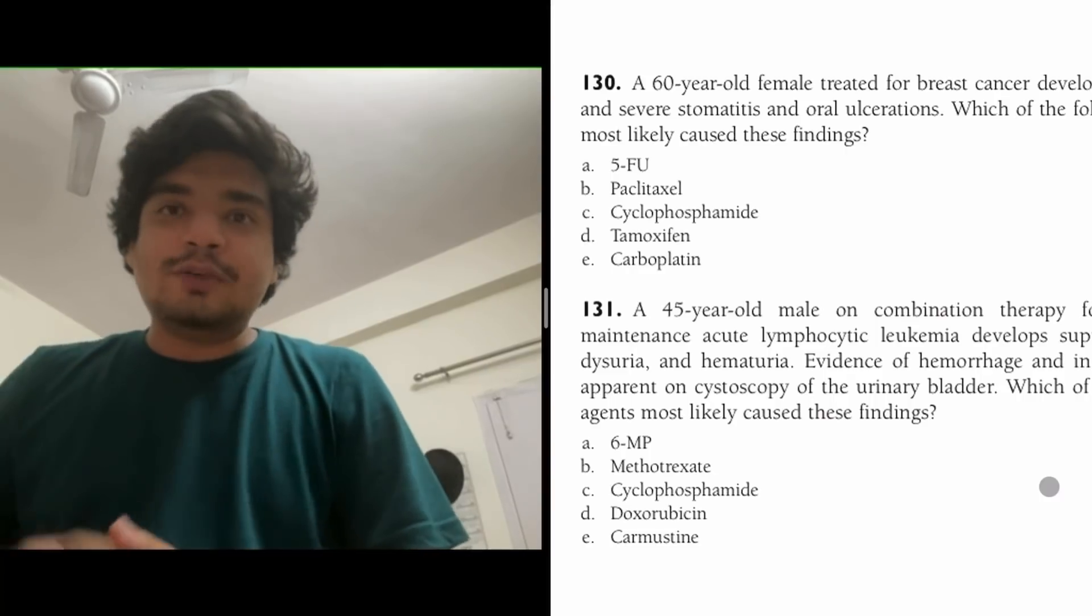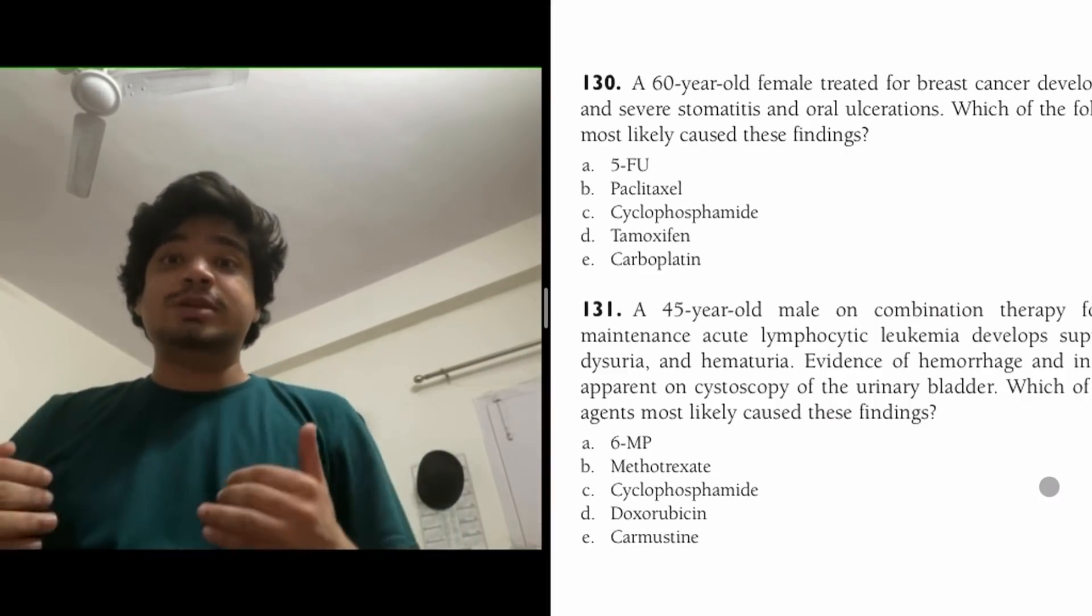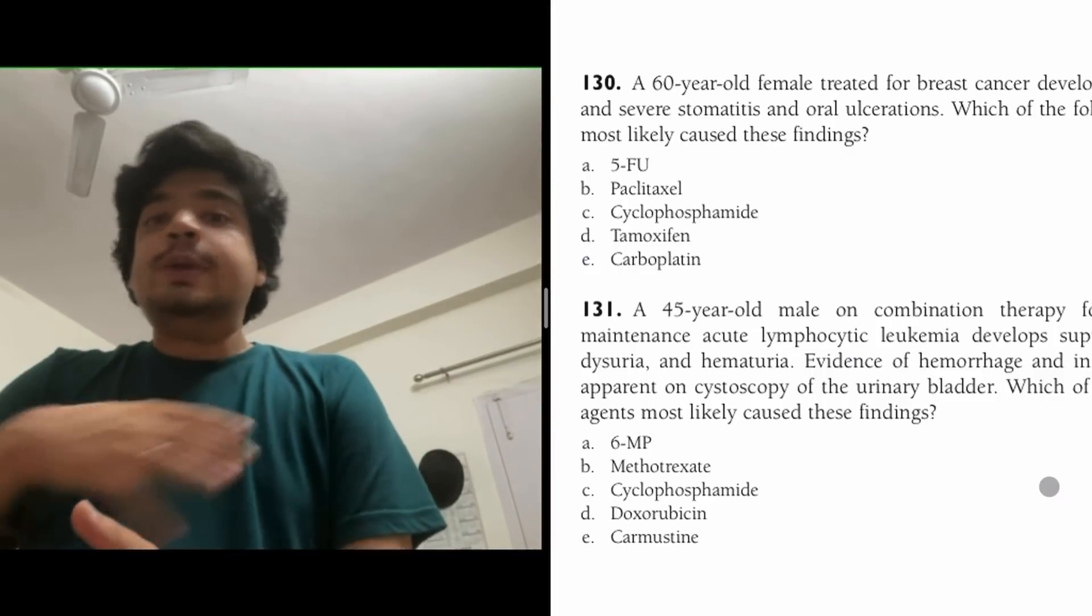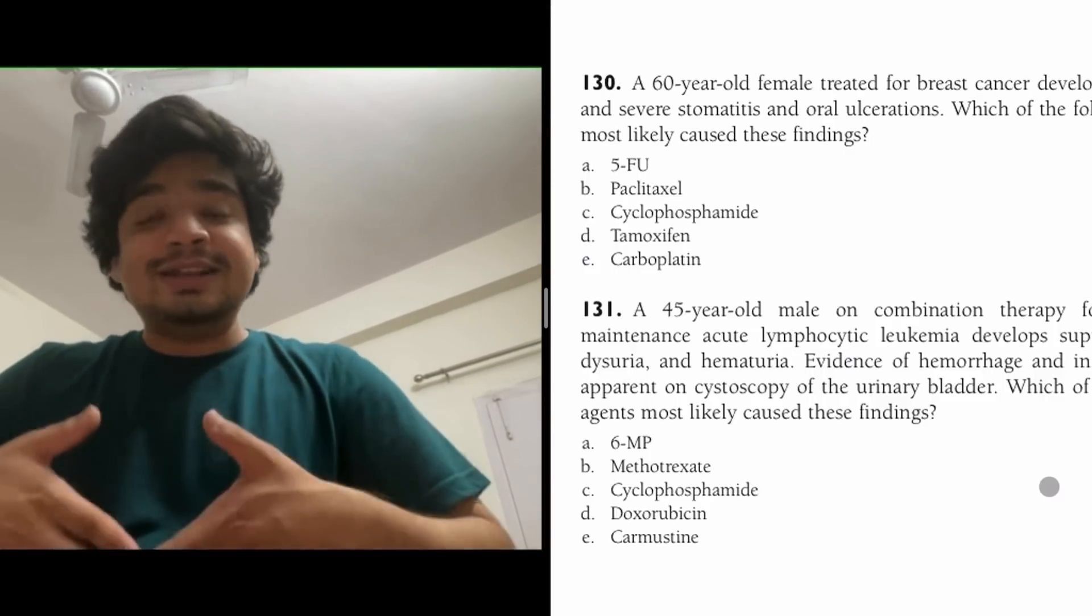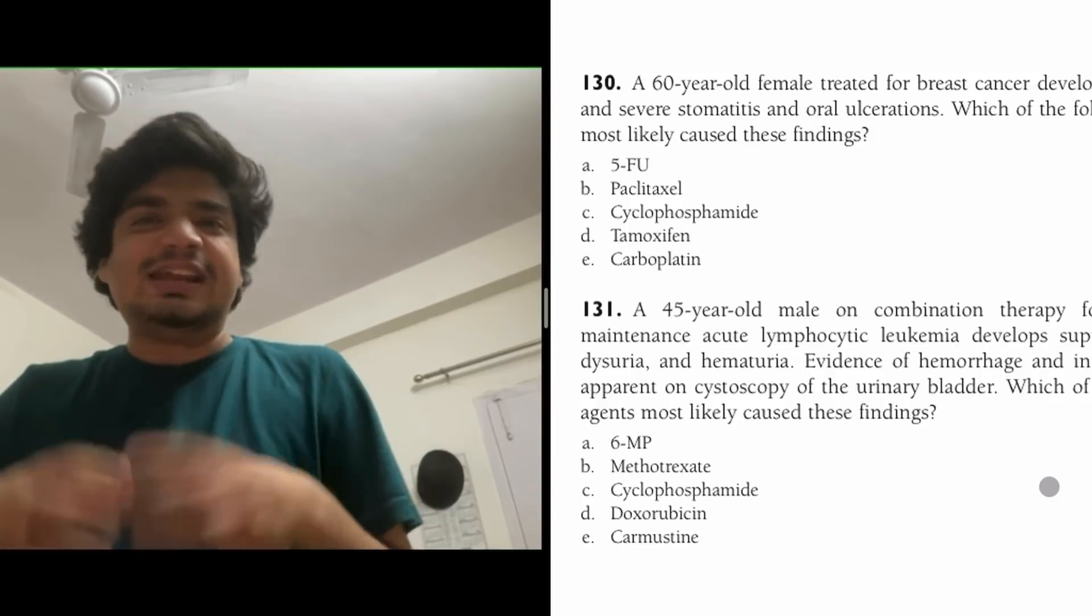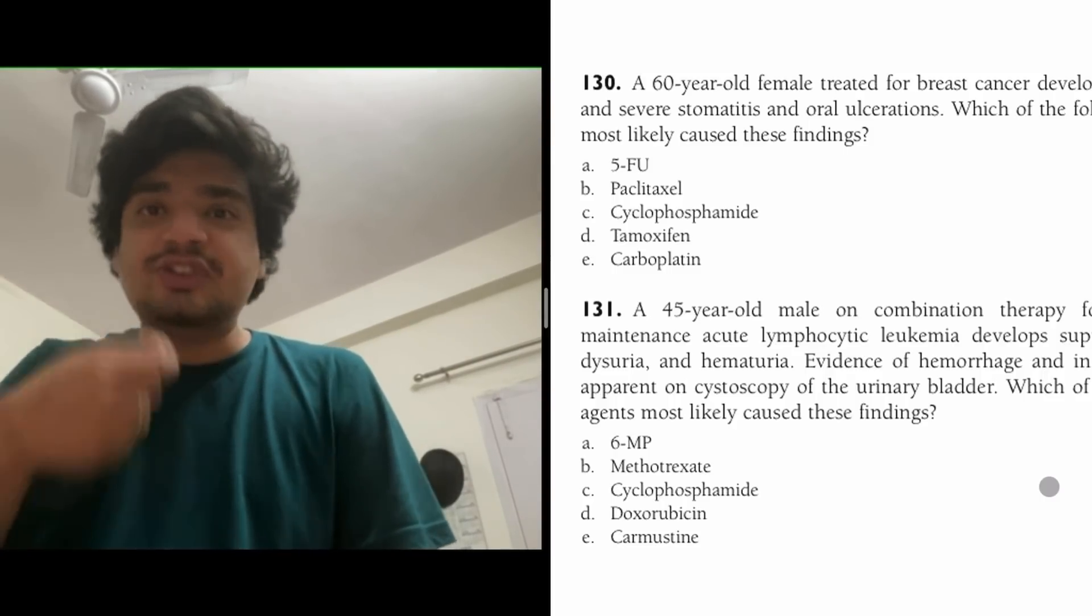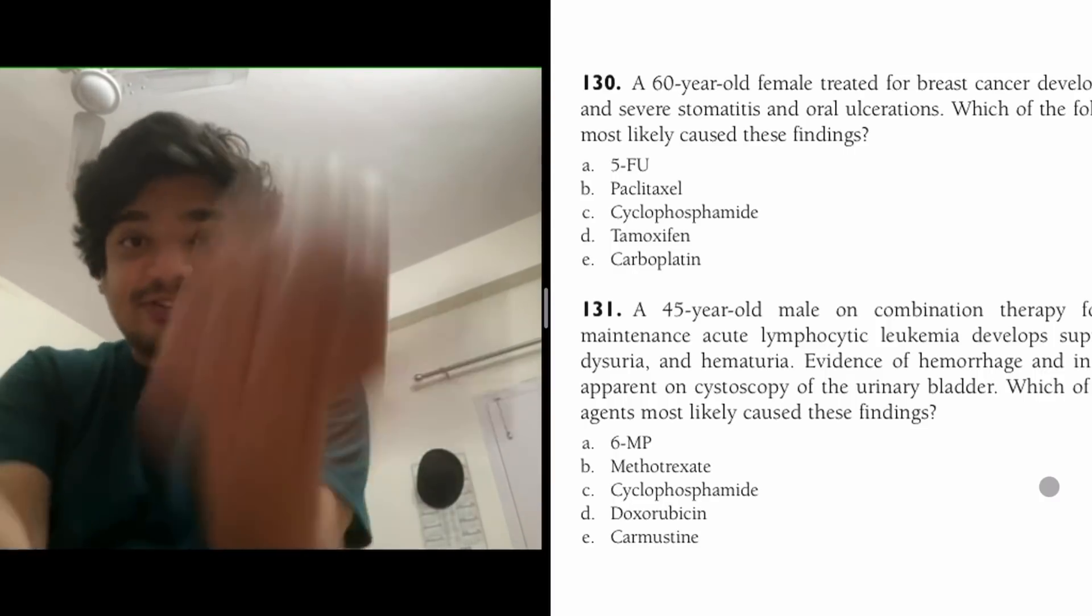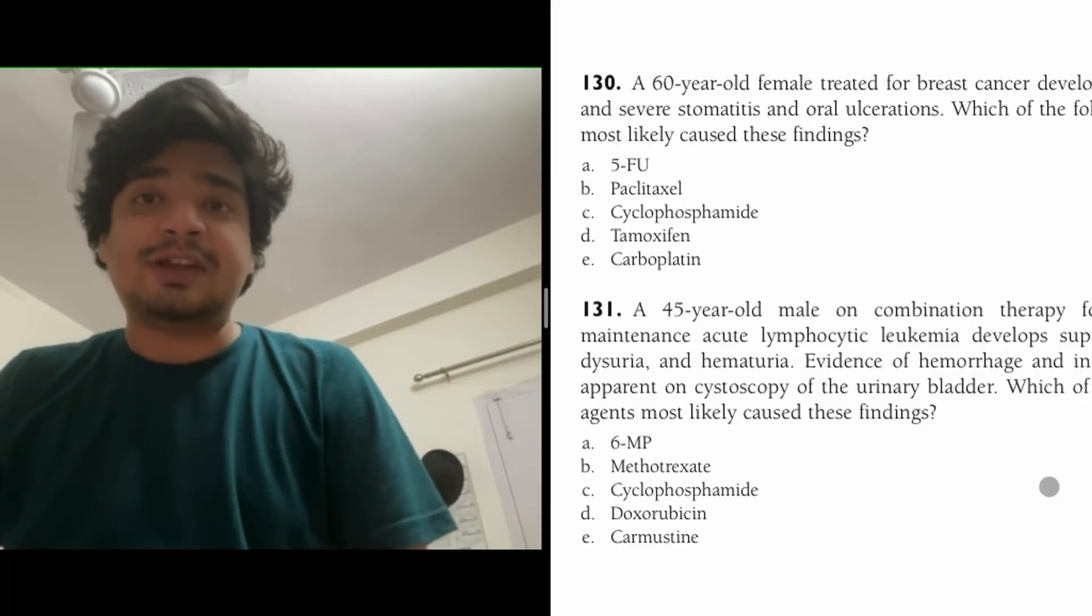It's very easy to remember, or tough to remember, a random fact like cyclophosphamide may cause hemorrhagic cystitis. A random fact will go out of your memory. But if you think of it in a clinical way - how will it present to me? An ALL patient will be given cyclophosphamide. He won't present saying 'I have hemorrhagic cystitis.' He'll come saying he's having bleeding in urine, hematuria, and very bad pain.